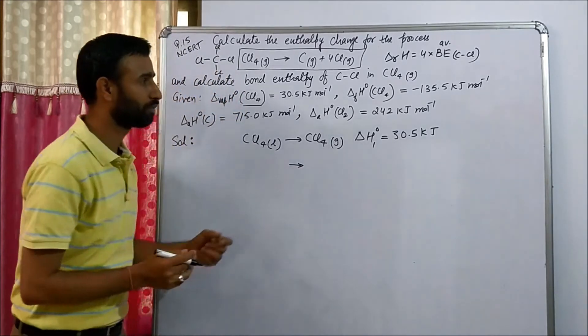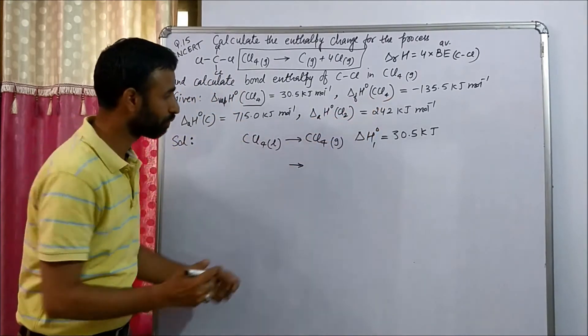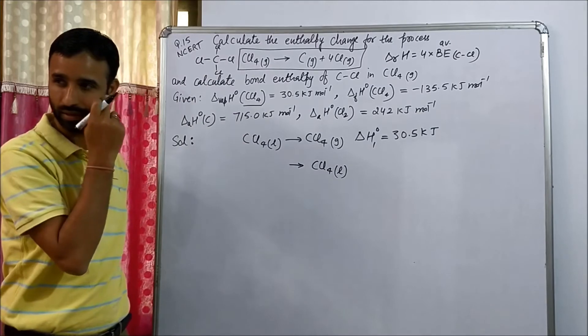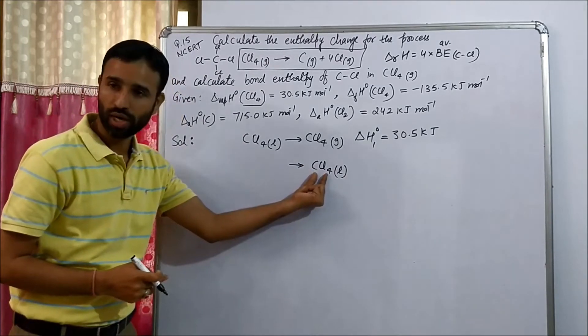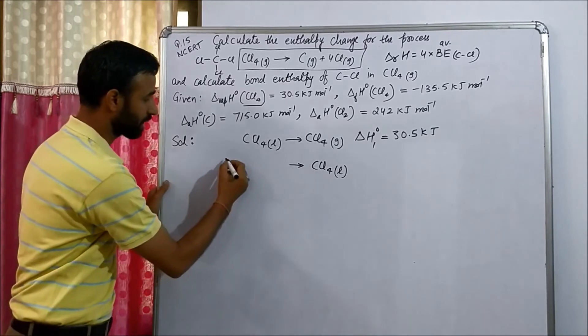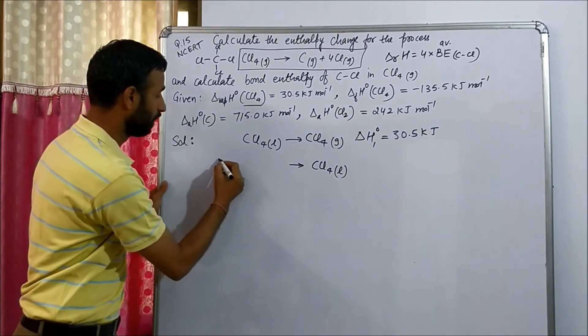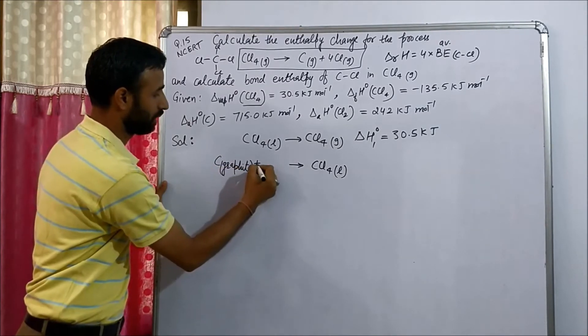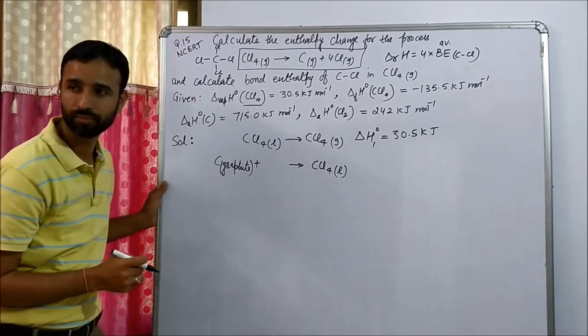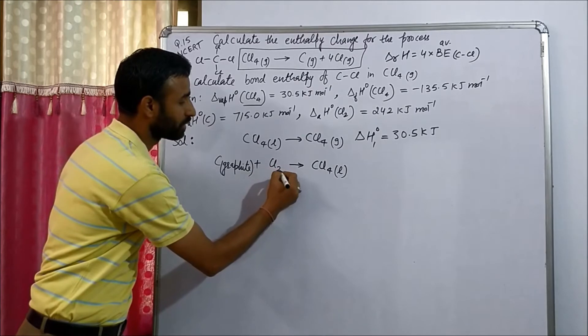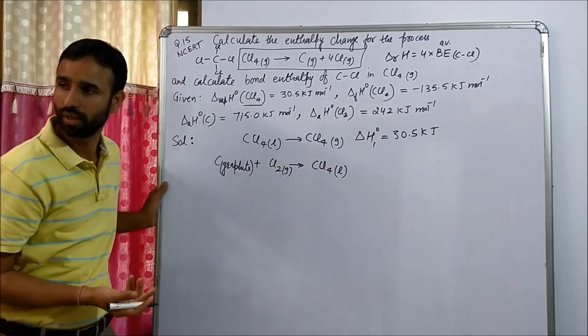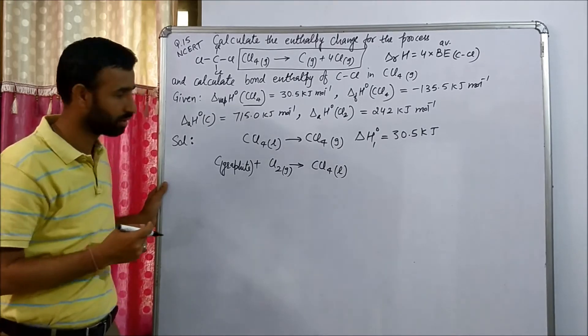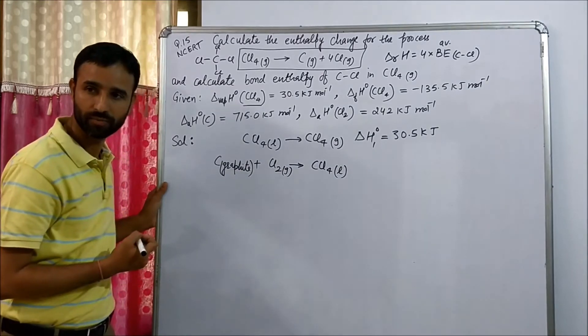So enthalpy of formation of CCl4. So first write CCl4 and CCl4 is in liquid state. And elements required are carbon. What is standard state of carbon? Very good. Standard state of carbon is graphite. And standard state of chlorine, Cl2 gas. Chlorine is in the form of Cl2 gas, like in that case hydrogen, H2 gas. And how many Cl2 gas are required? Two.